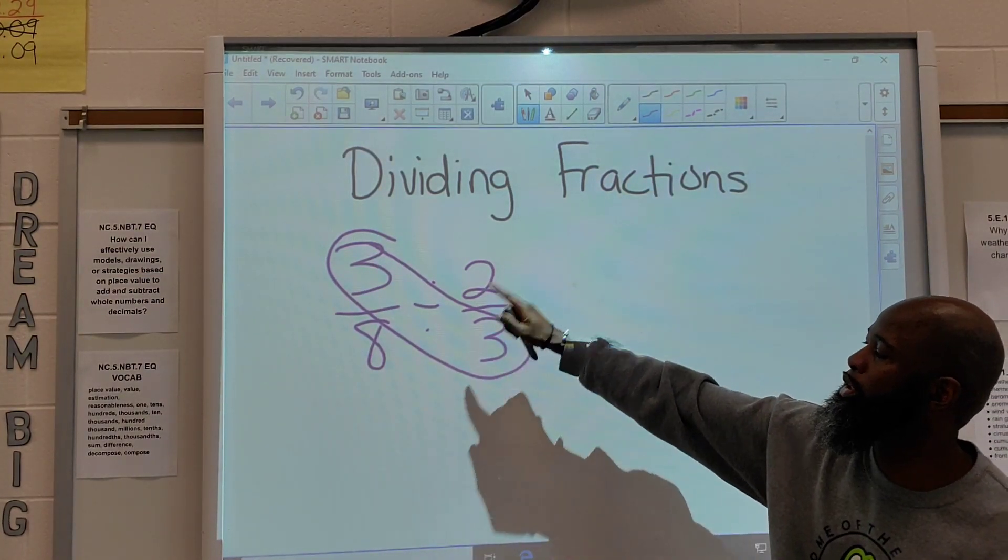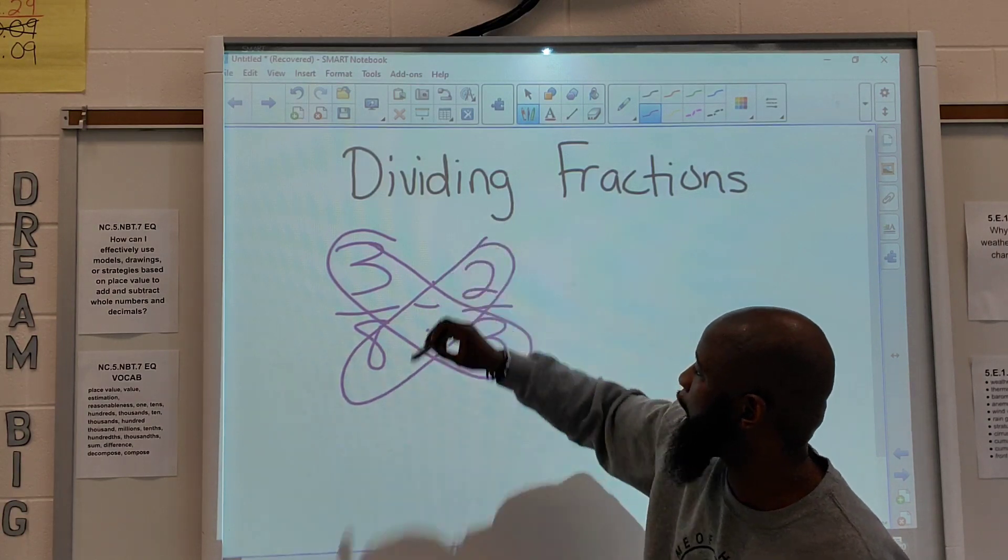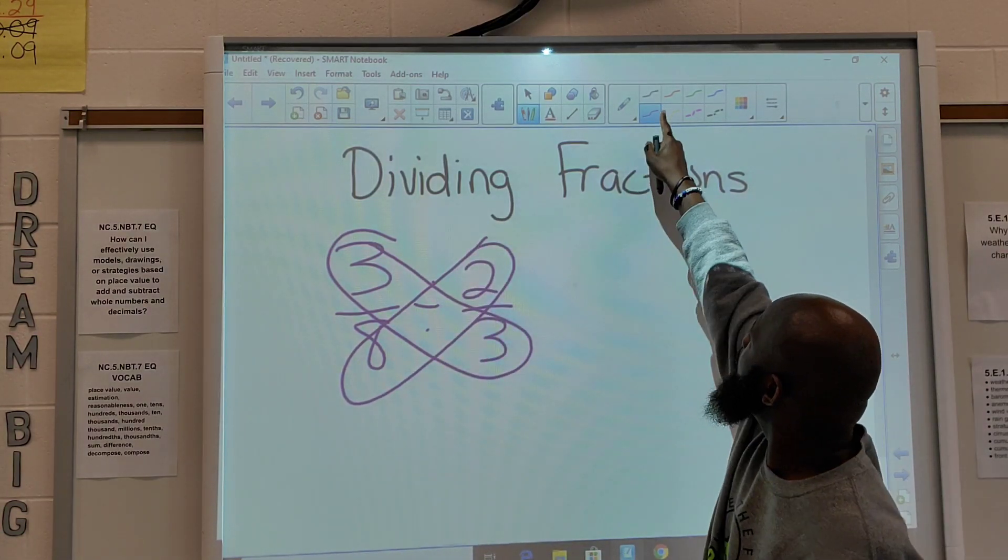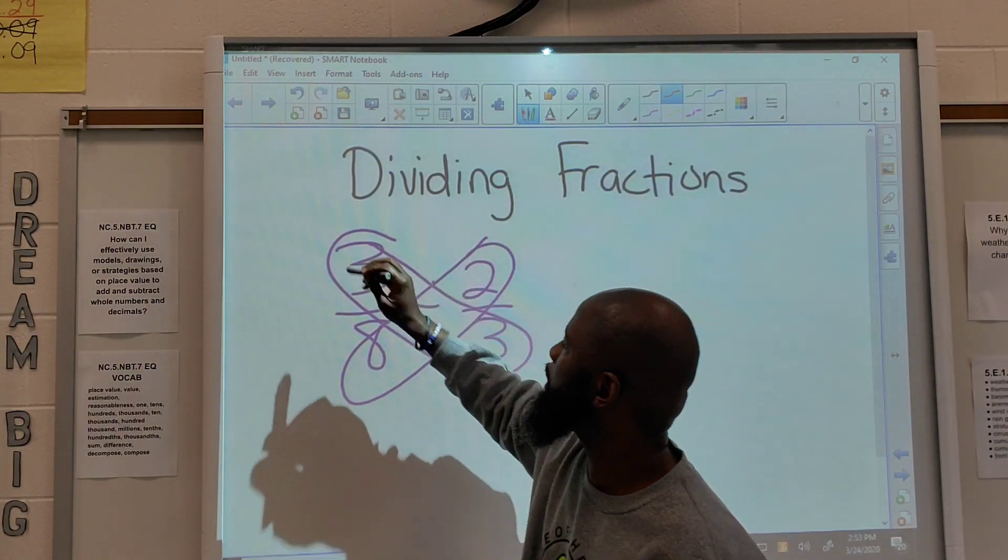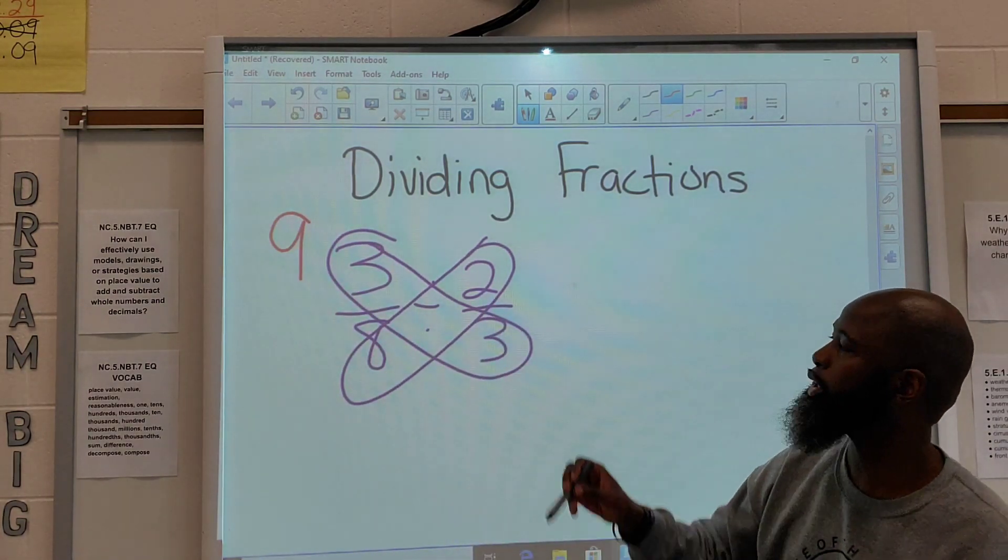Alright, we'll take the other numerator multiplied by the opposite denominator. So, we got 2 times 8. Alright, so 3 times 3 is 9, 8 times 2 is 16.